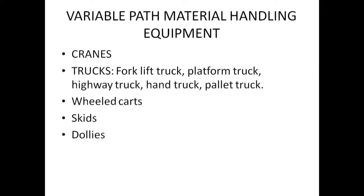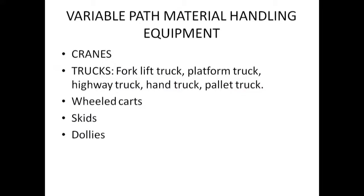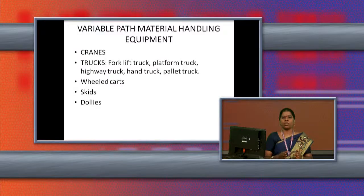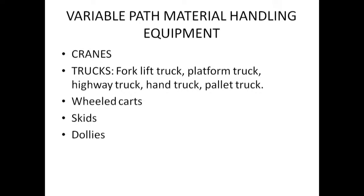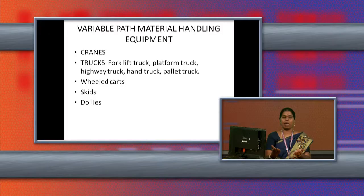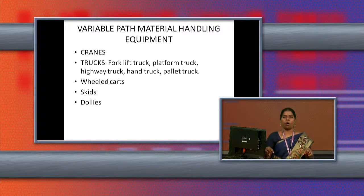The next variable path equipment is trucks. There are three-tyre trucks and two-tyre trucks. Trucks are used inside the organization to move materials from one place to another — from the godown to the manufacturing area, from the manufacturing area to the warehouse, or from the warehouse to the customer. There is the forklift truck, which has forks in front to lift and move materials. There is also the platform truck, which carries materials on a platform at the front.